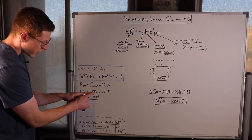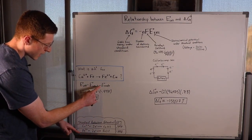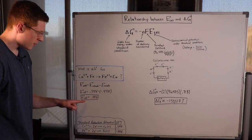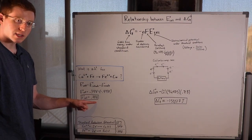So 0.34 at our cathode, and then minus negative 0.44 at our anode, and we get our E-cell to be 0.78 volts.